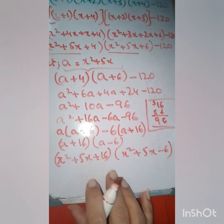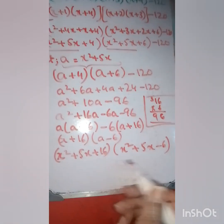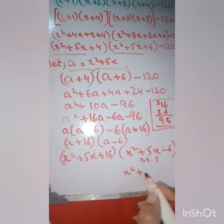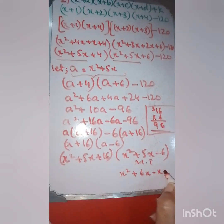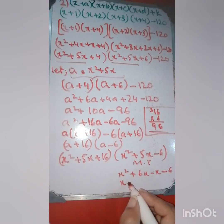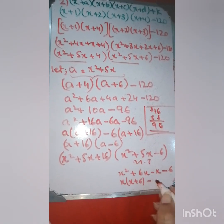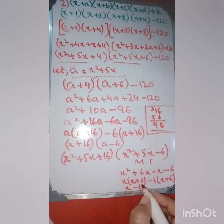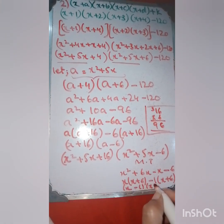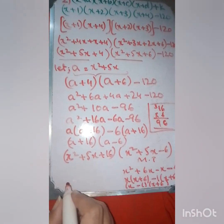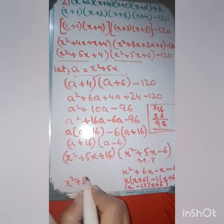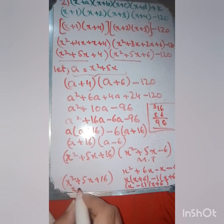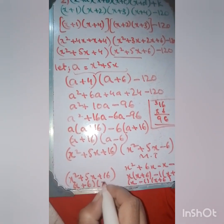We can simplify further. For x² + 5x minus 6, applying the middle term: 6 times 1 is 6, so x² + 6x minus x minus 6, giving x(x + 6) minus 1(x + 6), which is (x minus 1)(x + 6). So the final answer is (x² + 5x + 16)(x minus 1)(x + 6).